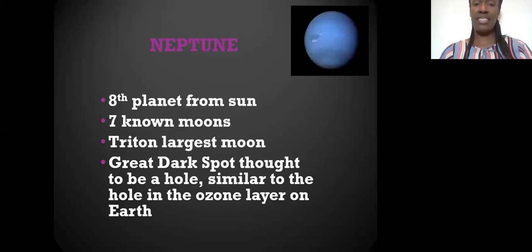Neptune, the eighth planet, last but not least. It has seven known moons, Triton the largest moon. This one is the dark and mysterious planet because it has a great dark spot, thought to be a hole similar to our ozone layer hole in the Earth.